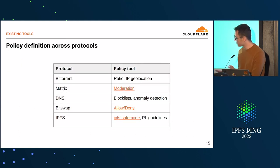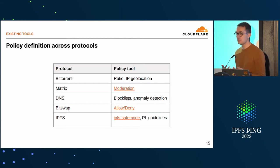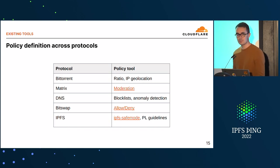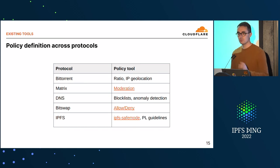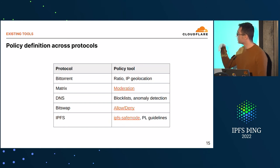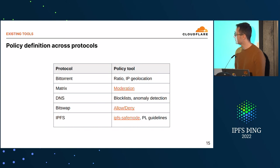Across various protocols — not an exhaustive list — there have been various tools and approaches taken for policy definition. I always like to bring up Bitcoin because there's been a lot of software and decisions made there which I think are relatable to IPFS. For BitTorrent, there's the ratio system and IP geolocation among a very rich set of tools.